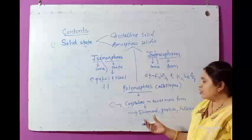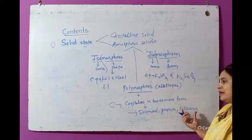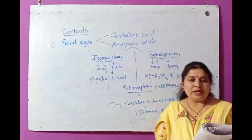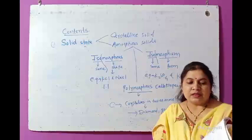Carbon shows allotropic property — that is diamond and graphite. Sulphur also shows allotropic forms: rhombic sulphur and monoclinic sulphur are the allotropic forms of sulphur.